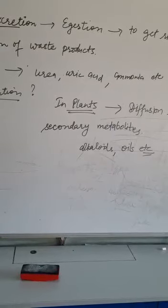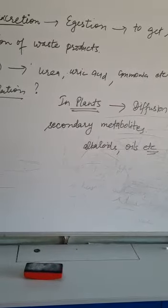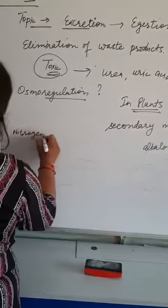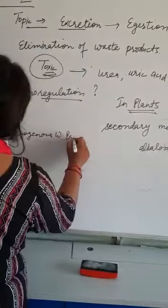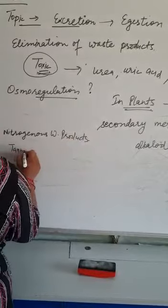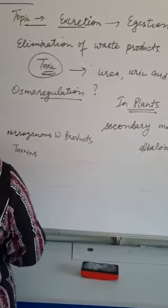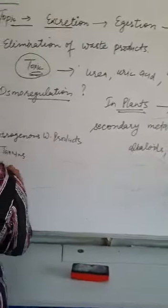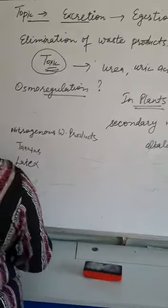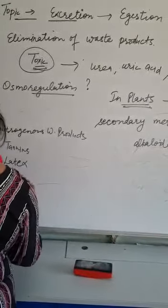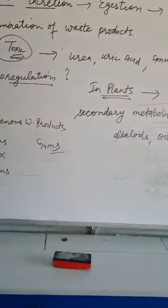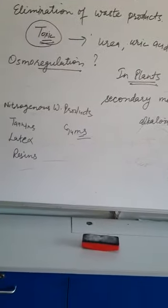Other waste products of metabolism include nitrogenous waste products, tannins which are aromatic compounds, latex which is extracted by special cells, resins, and gums. All these are waste products formed by plants.